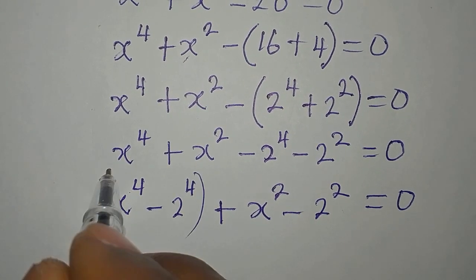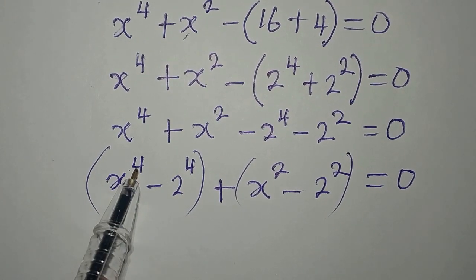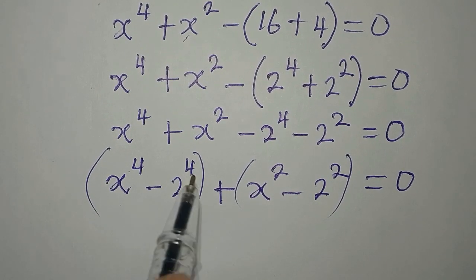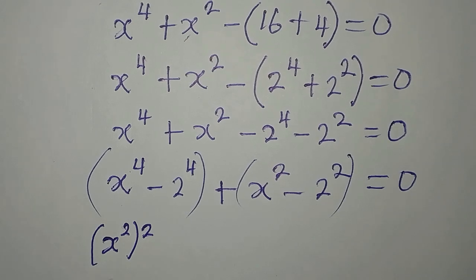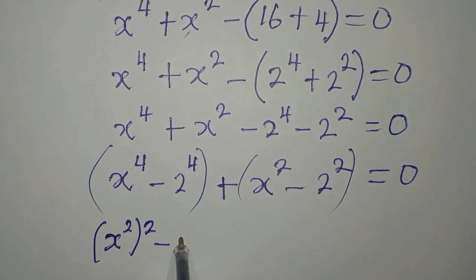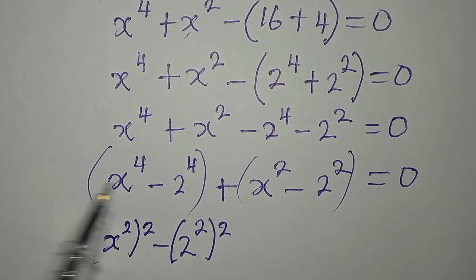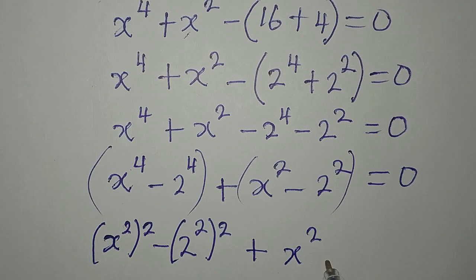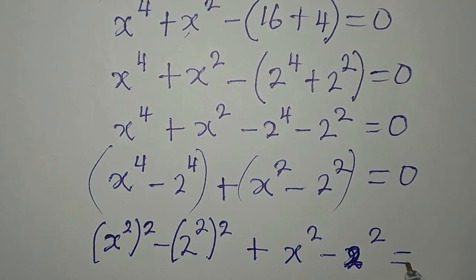Now we can simplify the first group and then simplify the second group. To simplify the first group, we want to apply difference of two squares. To do so, we have to break it down: x to the power of 4 is the same as x squared to the power of 2, then minus 2 to the power of 4, which is the same as 2 to the power of 2 to the power of 2. Then plus x to the power of 2 minus 2 to the power of 2, and everything equals zero.